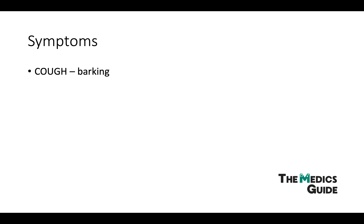Moving on to the symptoms, there's a triad to remember. Starting off, there's a cough — a seal-like barking cough. Then stridor, which is often known as noisy breathing; we get this because of how air passes through the obstructed airway, and it's different to a wheeze which often comes from lower down in the lung. We also get retractions of the chest, or intercostal retractions, which is when the muscles in between the ribs pull inwards.